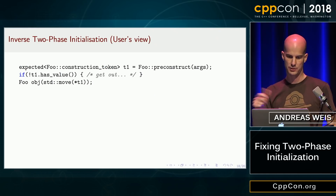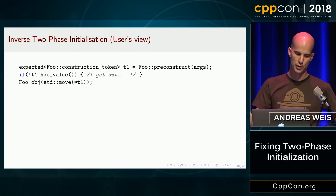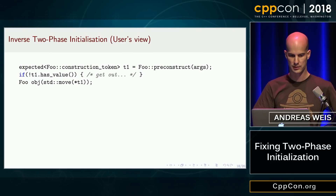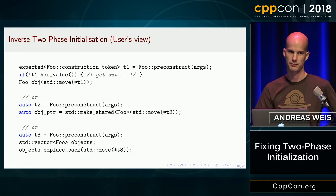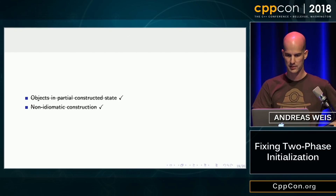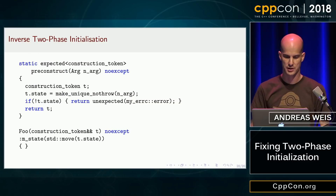On the user side, you call pre-construct, get back an expected construction token, check for errors, and if there are none, consume it via the constructor to get your final object. This also works with make_shared, emplace_back, and whatever else your library might be doing. This solves both of our problems.